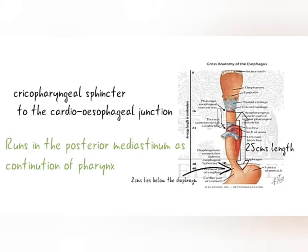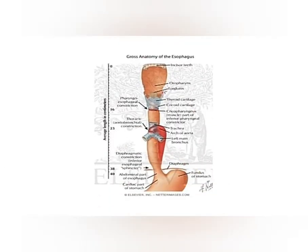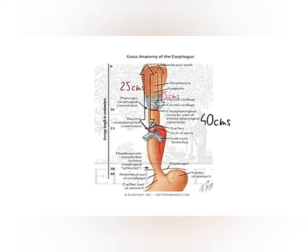Let's see the constrictions. The cricopharyngeal constriction is at 50cm distance from the incisor. The aortic and bronchial constriction is at 25cm distance from the incisor teeth. The diaphragm sphincter is at 40cm distance from the incisor teeth.